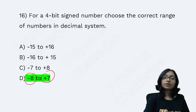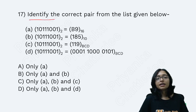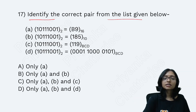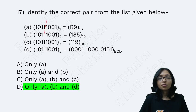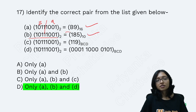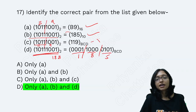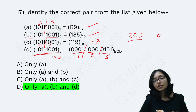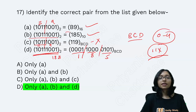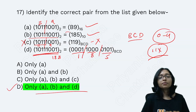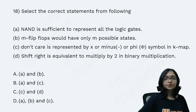For identifying correct binary-to-BCD pairs: divide into 4-bit groups. Option C appears correct when converting binary to decimal (giving 11 and 9), but BCD only allows digits 0–9; 11 is not valid in BCD. Therefore option C is wrong, and the correct answers are A, B, and D.